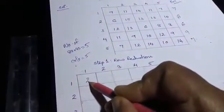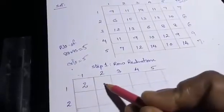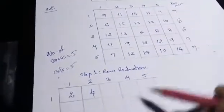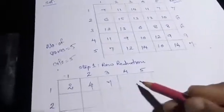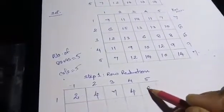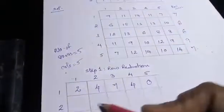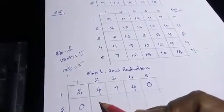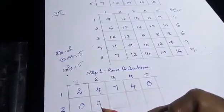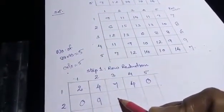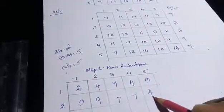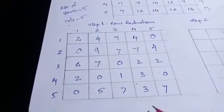For the first row, the minimum is 7. So: 9 minus 7 is 2, 11 minus 7 is 4, 14 minus 7 is 7, 11 minus 7 is 4, and 7 minus 7 is 0. For the second row, minimum is 6: 6 minus 6 is 0, 15 minus 6 is 9, 13 minus 6 is 7, 13 minus 6 is 7, 10 minus 6 is 4. After row reduction, you get the new reduced table.